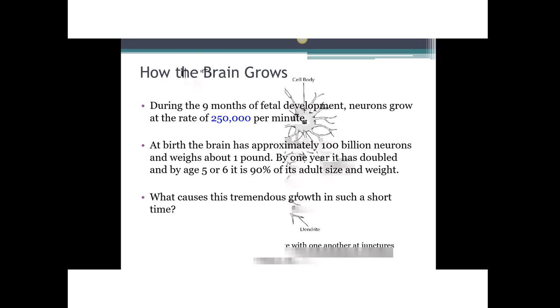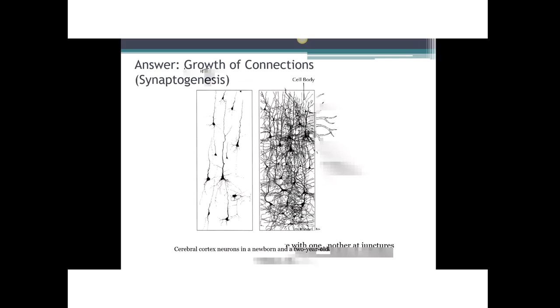The answer is not more neurons — we are born with essentially all the neurons we will ever have. The growth comes from connecting more connections among neurons. Here are slides of actual brain tissue from the cortex at birth on the left and at two years old on the right, and they show very graphically what happens as the brain grows. This is actually a picture of learning — at two years old there are many, many more connections than there were at birth.